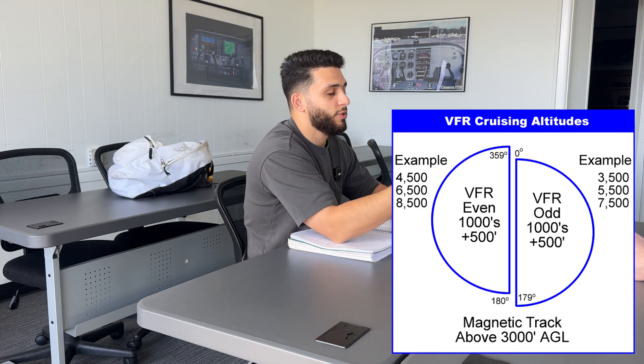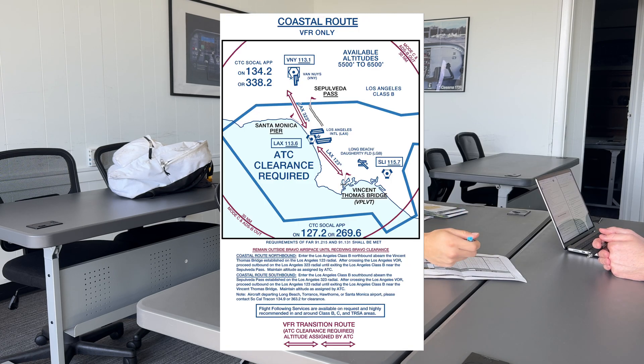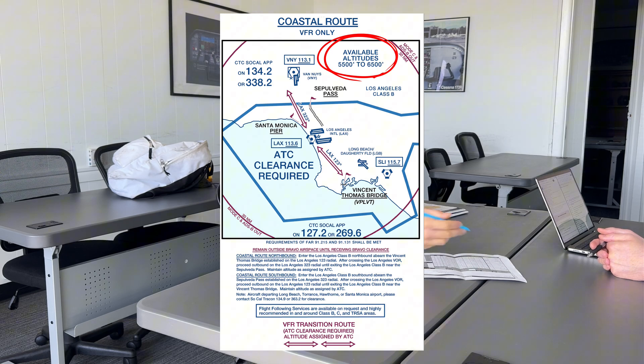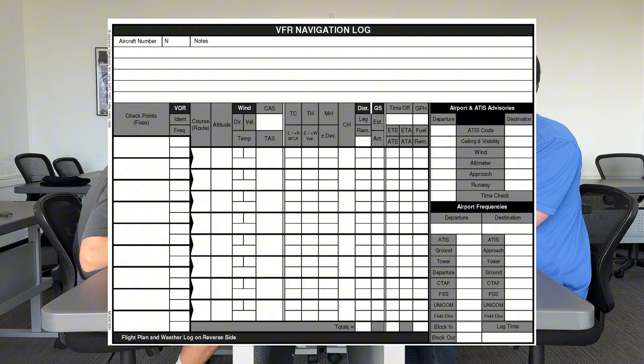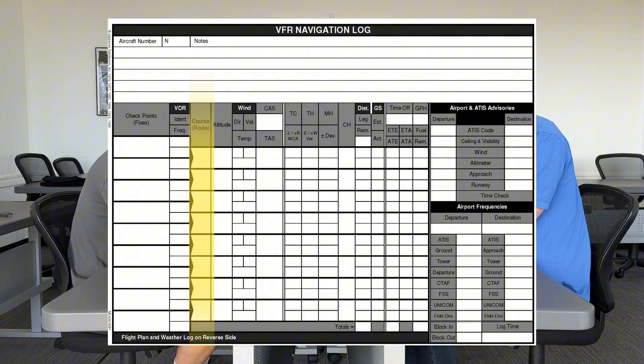I chose 6,500 also because I'm going through the Bravo, and the coastal route requires me to be at 6,500, so I just kept it there. Elevation also allowed me to be at 6,500. How did you arrive at the course number? I drew a line from the first point to the Huntington Beach Pier with my plotter on a sectional.